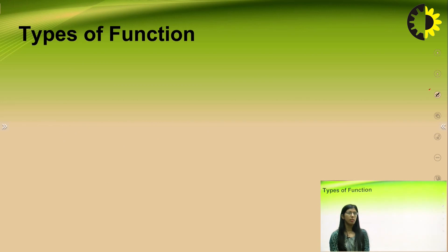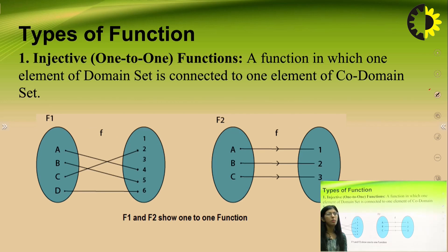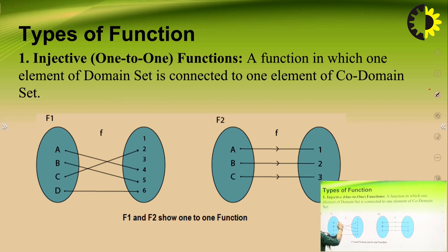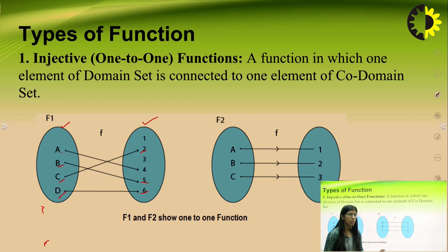Next are the types of functions: injective, surjective, bijective, into, one-one into, and many-one function. The first type is the injective function. As the name suggests, it is a one-to-one mapping — a function in which one element of the domain set is connected to only one element of the co-domain set. For example, a is associated with 4, b with 5, c with 2, and d with 6. Since each domain element maps to a unique co-domain element, this is a one-one (injective) function.